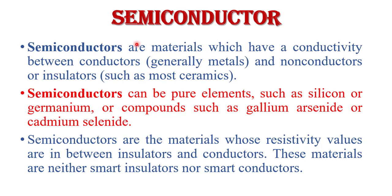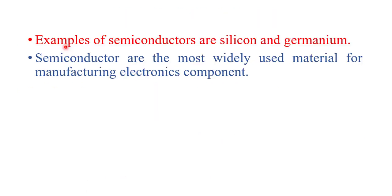Now the third material is semiconductor. Semiconductors are those materials which have a conductivity between conductors and insulators. It means semiconductors do not allow free electrons to flow as conductors do. Semiconductors can be pure elements such as silicon or germanium, or compounds such as gallium arsenide or cadmium selenide. Their resistivity values are in between insulators and conductors — these materials are neither good insulators nor good conductors. Semiconductors are the most widely used materials for manufacturing electronic components.